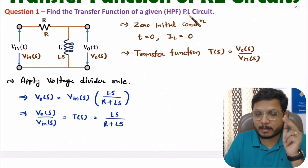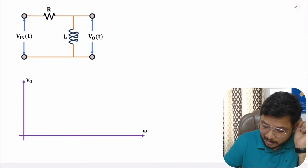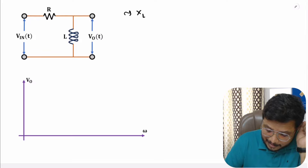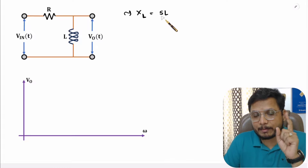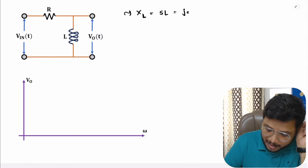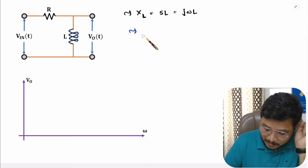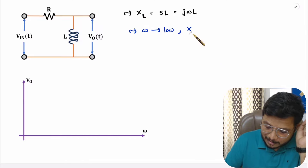Now let me explain the frequency response of the high pass filter RL circuit. The impedance of the inductor is XL = sL, and in the Laplace domain s = jω, so XL = jωL. At lower frequencies, if ω has a lower value, then XL = jωL is also low.